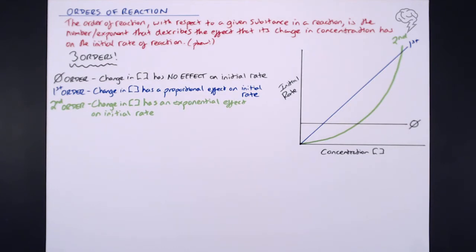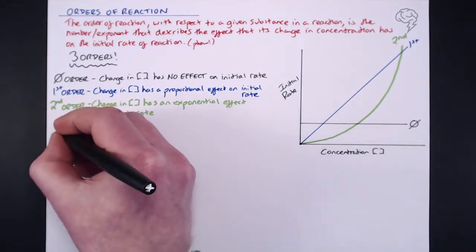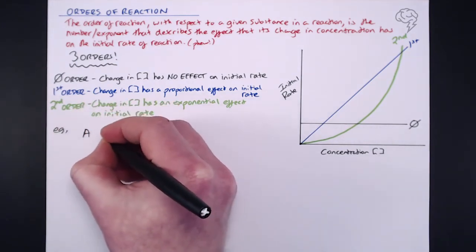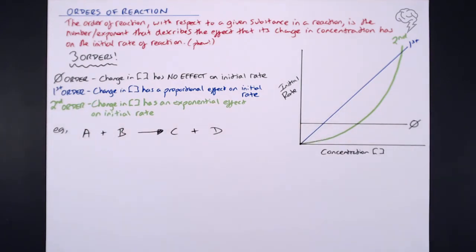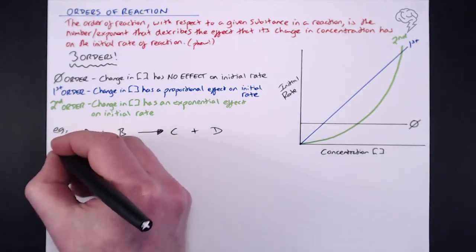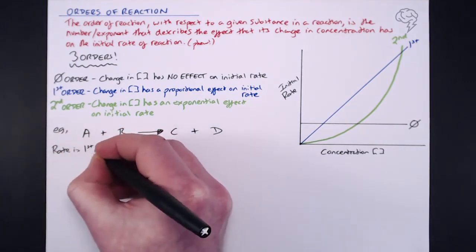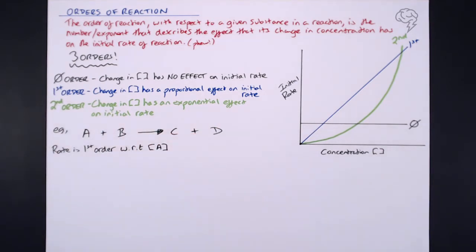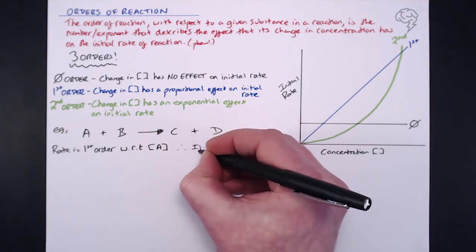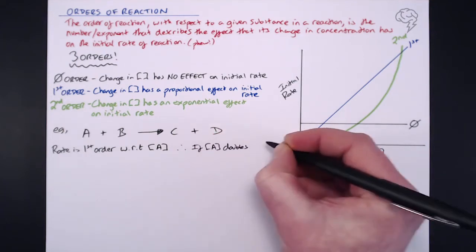So let's put this into some context with a real simple reaction. Let's say in a reaction we've got two reactants, A and B — we don't really care about the products. What are the orders of reaction with A and B? Well, let's say the rate is first order with respect to the concentration of A. So if the concentration of A doubles, the rate doubles.